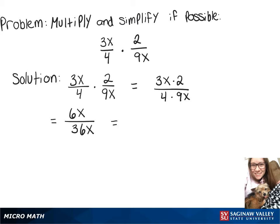And we can leave our 6x alone on top for now, but then if we factor the bottom, we can rewrite it as 6x times 6. And then breaking that up into two separate fractions, we'll write 6x over 6x times 1 over 6.